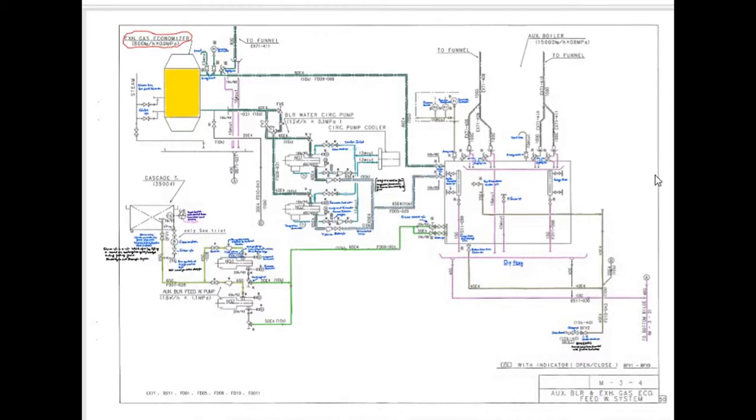Hello Friends, today for understanding the piping diagram, we will take a line diagram for auxiliary boiler and exhaust gas economizer feed water system. In this video, we will discuss some of the symbols and markings that are present in line diagram. That will help you to clear your concepts.